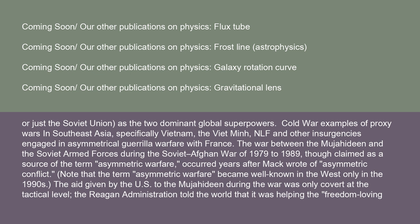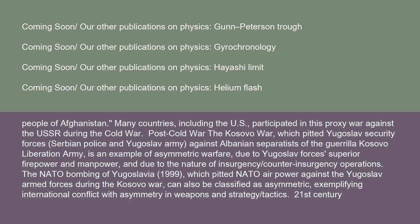The war between the Mujahideen and the Soviet Armed Forces during the Soviet-Afghan War of 1979–1989, though claimed as a source of the term asymmetric warfare, occurred years after Mack wrote of asymmetric conflict. The term asymmetric warfare became well-known in the West only in the 1990s. The Reagan administration told the world it was helping the freedom-loving people of Afghanistan. Many countries, including the U.S., participated in this proxy war against the USSR during the Cold War.